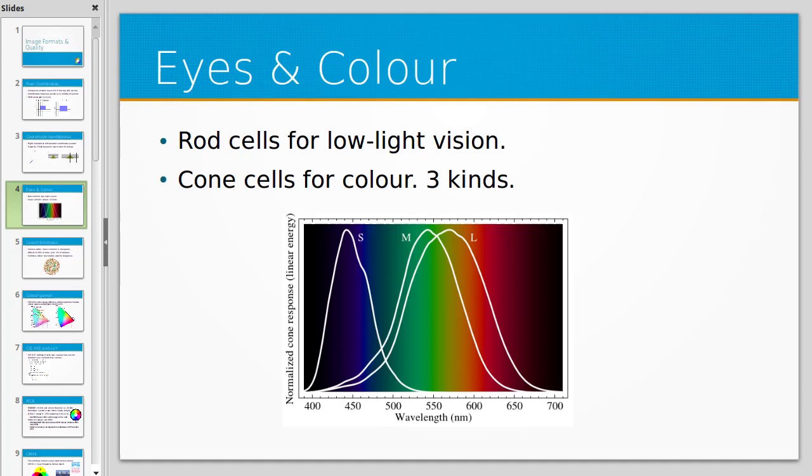Different animals have different visual responses. Some insects, fish, and animals like deer can see ultraviolet light, but our lenses filter it out. Each cone cell type has a bell curve response to different wavelengths, and our eyes and brains combine these responses to create the single color we perceive.